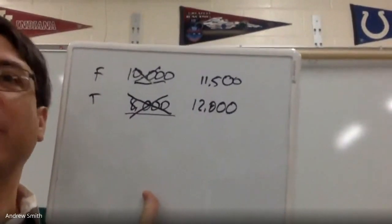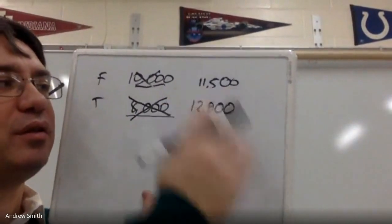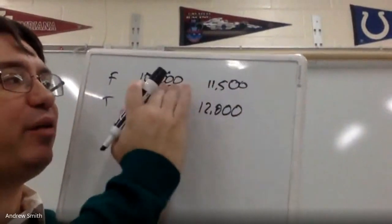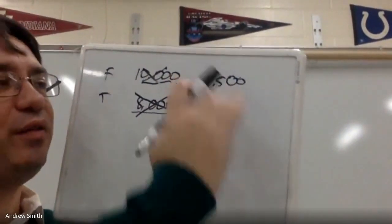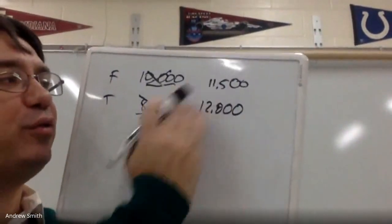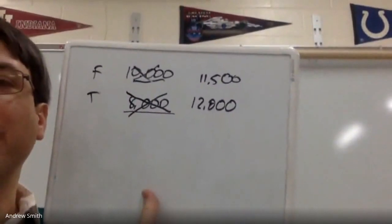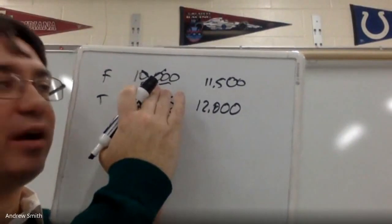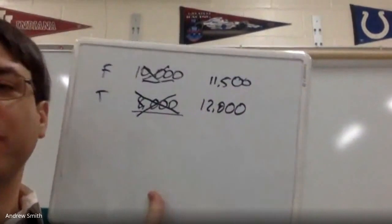Here's the other part: Ford raises its prices to $11,500 because there is less competition and the competition has its prices artificially raised. What is stopping Ford from raising its price and still being the cheapest car? Now if you need to buy a new car, not only can you not get one for $8,000, you can't even get one for $10,000 — you've got to pay $11,500. Tariffs do not just raise the price of foreign goods; they also raise the price of domestic goods.